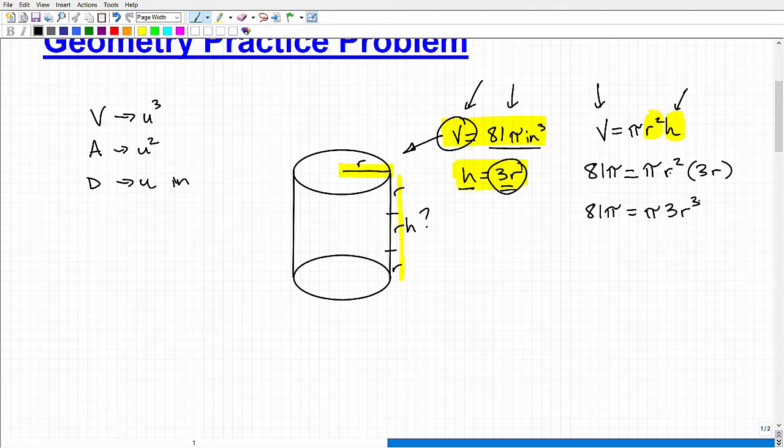Now I wouldn't want to write it precisely like this. A better way of writing it would be 81 pi equals 3 pi R cubed. And of course we know pi is just a number, a value, 3.14, on and on.